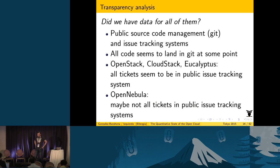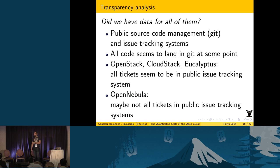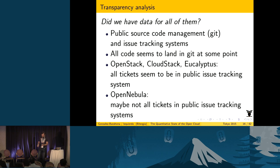Let's look at the transparency analysis. We did get data for all of them, so they are really doing open development. There are some minor issues with some of them. All of them have Git repositories so you can get all Git information — and it's not just a dump of code; you can see the real patterns of collaboration over time. For OpenStack, CloudStack, and Eucalyptus, it seems all tickets are in the ticketing system. That's not as clear for OpenNebula — the traffic there suggests they may have a different tracking system for customers, meaning OpenNebula may not be showing all ticket information.